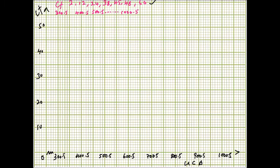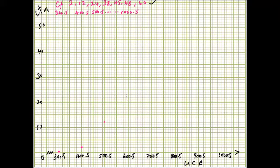We identify the points then join them. We start from 0. The cumulative frequency at the first point is 2. The next cumulative frequency is 12. Note that one small square represents 1, so it is straightforward. After 12 we go to 24. Then the next one is 38.